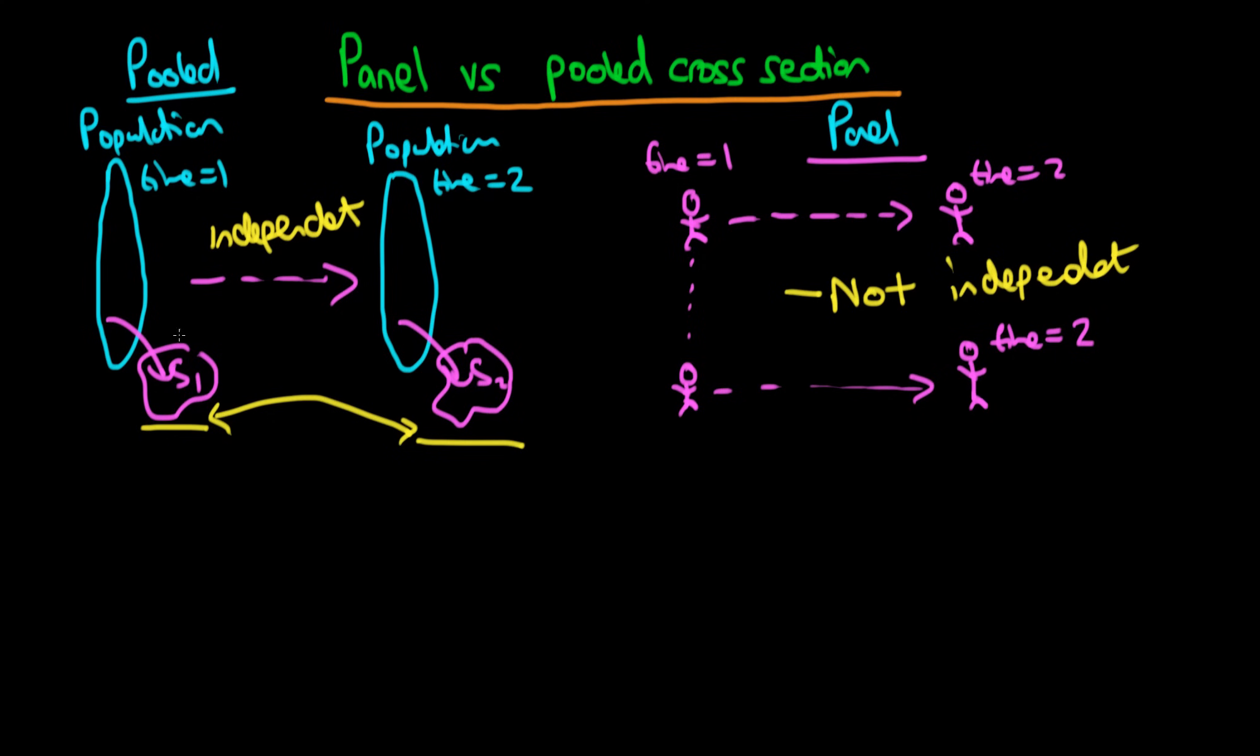Okay so it seems like we've got an added layer of complexity in panel models and we do and because of this added layer of complexity we actually need a whole new set of tools for estimating models on panel data. We can't just apply OLS to all of these individuals' observations pooled together like we did in the pooled cross-sectional model.